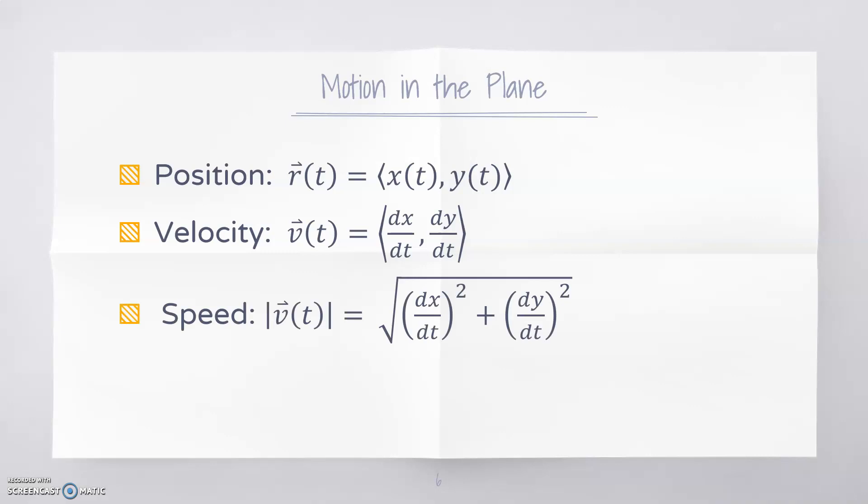Speed is going to be the magnitude of the velocity vector. It will be the length of that velocity vector. You find that with the Pythagorean theorem, and speed is a scalar, not a vector.